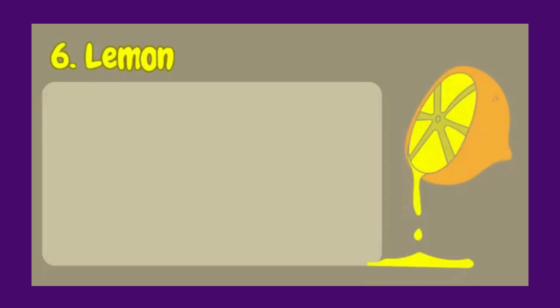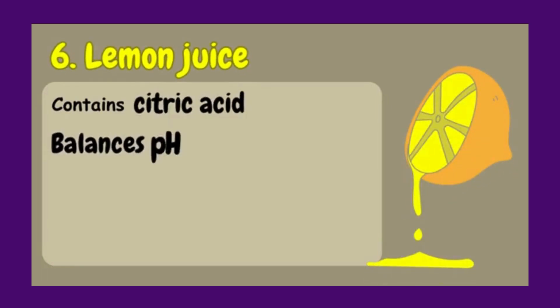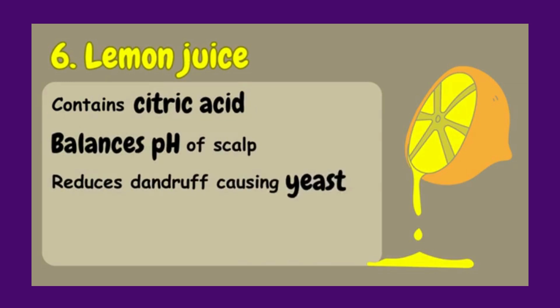Next in our list is lemon juice. Lemon juice contains citric acid, which helps balance the pH level of the scalp and reduces dandruff-causing yeast. It also acts as a natural astringent, controlling oil production.